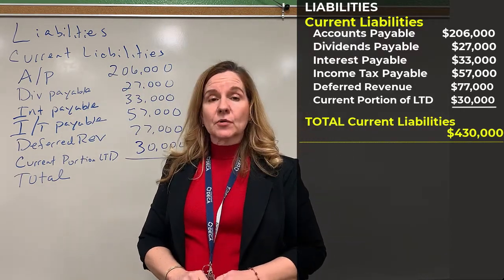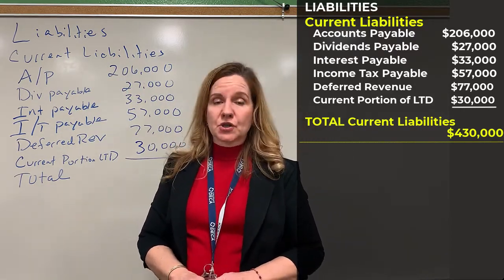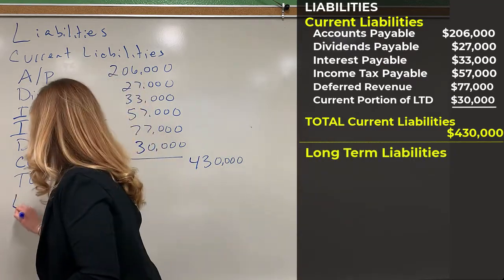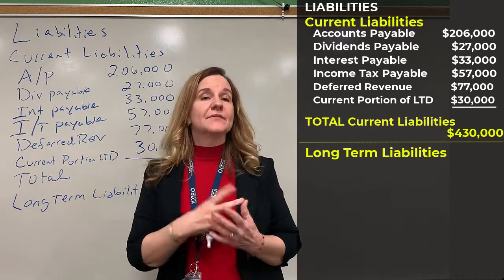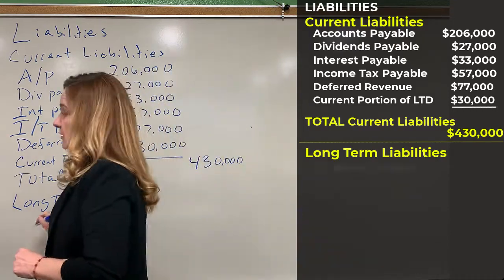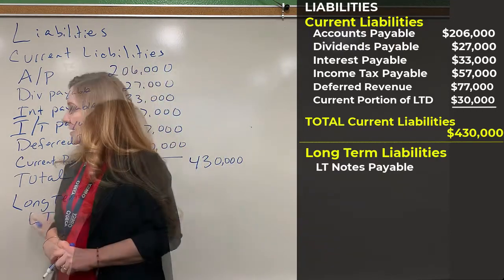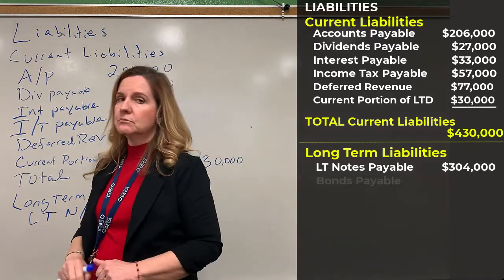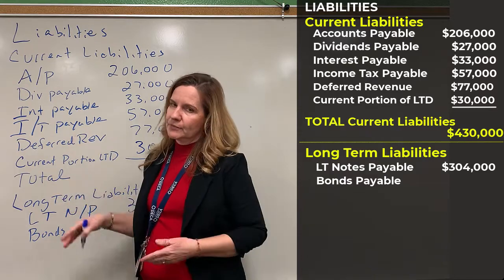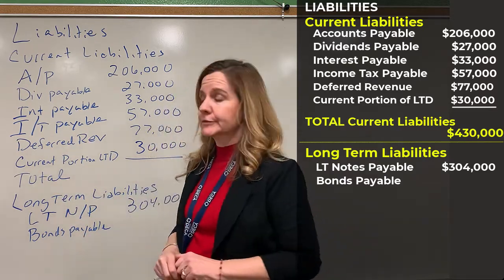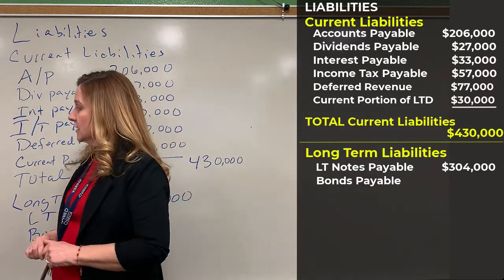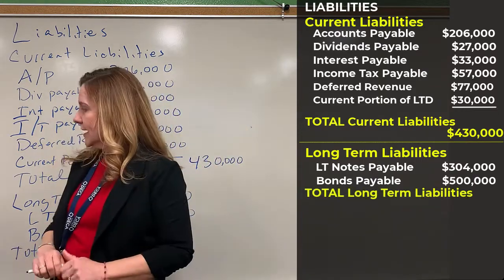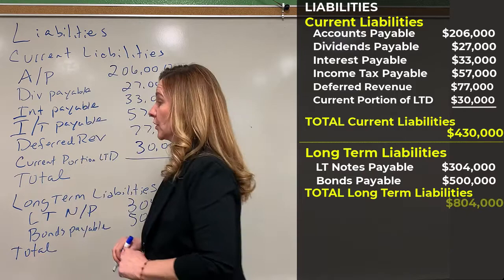The last category for liabilities is long-term liabilities. I'll put a header for long-term liabilities, and we just have two of them. We have long-term notes payable for $304,000, and bonds payable — the more you study accounting, the more you'll recognize when an account is long-term or current — for $500,000. We total that up and our total long-term liabilities is $804,000.